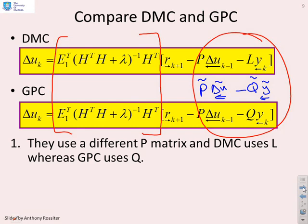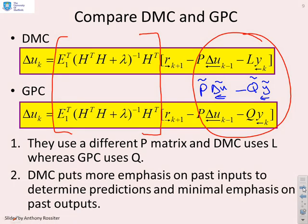So we're using different P matrix, and DMC uses an L matrix, whereas GPC uses a Q matrix. And what's the fundamental difference? DMC puts much more emphasis on past inputs, because we're using a step response model, and the main focus on the step response model is how do past inputs tell me about the future? And you have minimal emphasis on the past outputs. In essence, you just measure the current output and use only that.